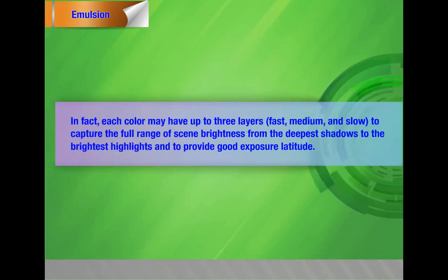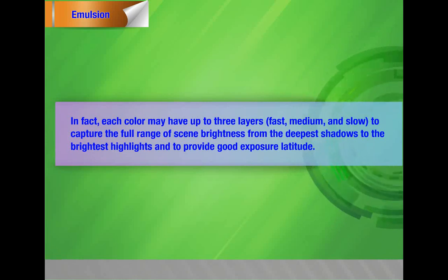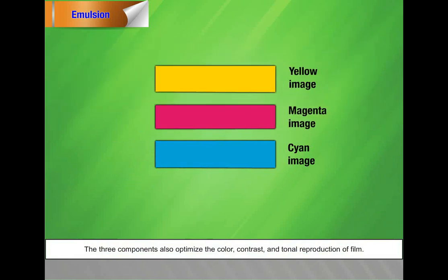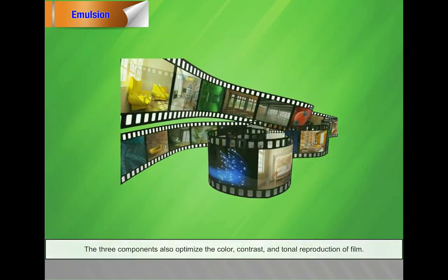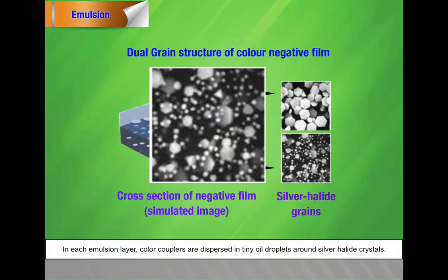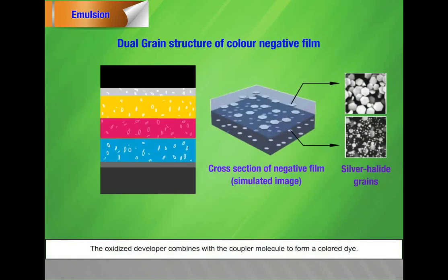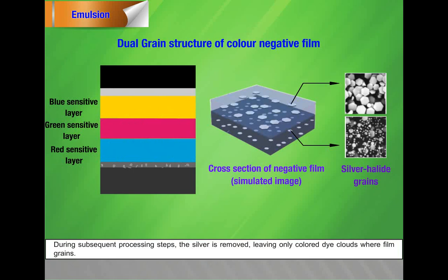Each color may have up to three layers — fast, medium, and slow — to capture the full range of scene brightness from the deepest shadows to the brightest highlights and to provide good exposure latitude. The three components also optimize the color, contrast, and tonal reproduction of film. In each emulsion layer, color couplers are dispersed in tiny oil droplets around silver halide crystals. When the developing agent reaches the sensitized silver grain, oxidized developer is formed after donating electrons to the silver halide. The oxidized developer combines with a coupler molecule to form a colored dye. During subsequent processing steps, the silver is removed, leaving only colored dye clouds where film grains were.